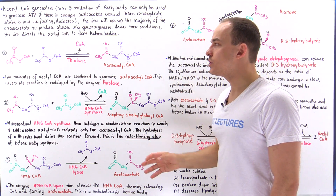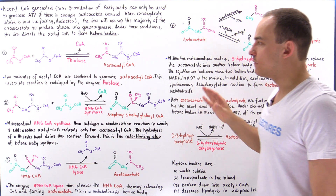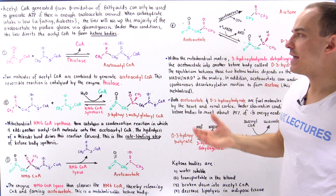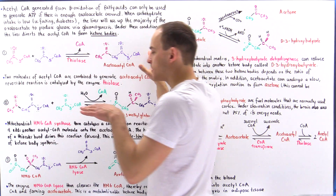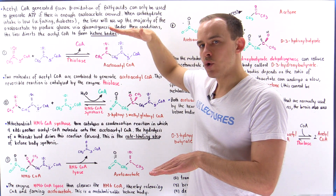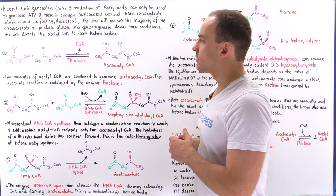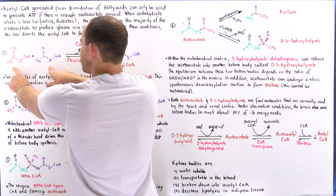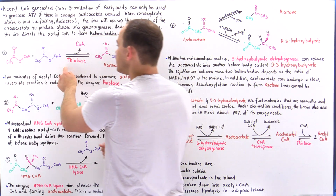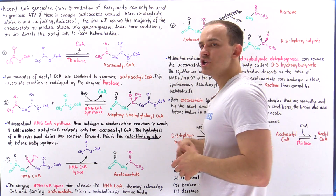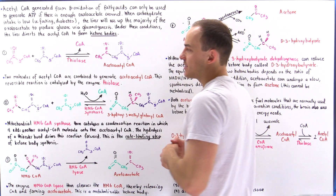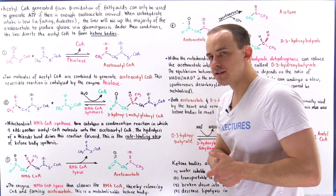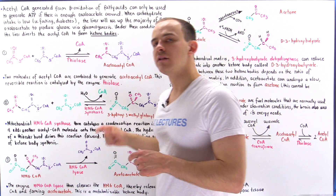Ketone bodies are actually energy fuel molecules. Let's discuss how we form them. There are four important steps in the formation of ketone bodies. In step one, with low levels of oxaloacetate and high levels of acetyl coenzyme A, two acetyl coenzyme A molecules are combined via a process catalyzed by thiolase to form acetoacetyl coenzyme A, releasing a coenzyme A. This is a reversible reaction catalyzed by thiolase.